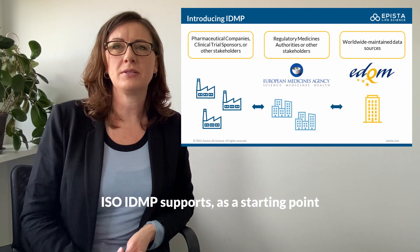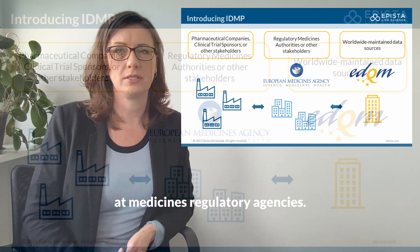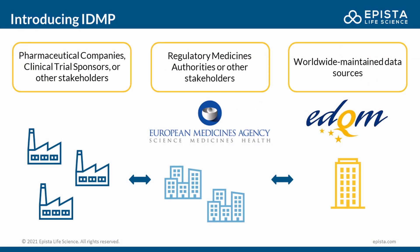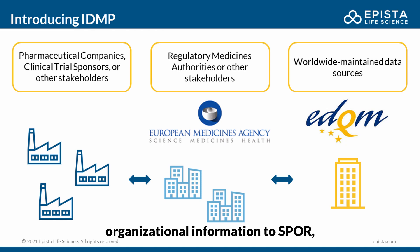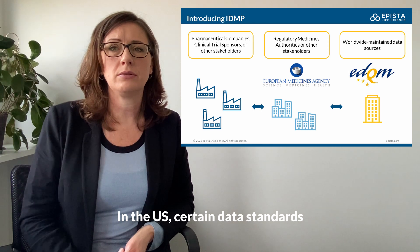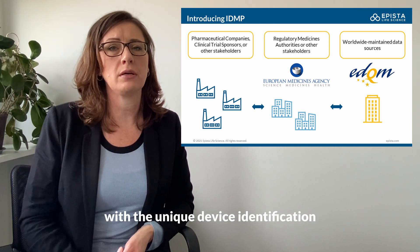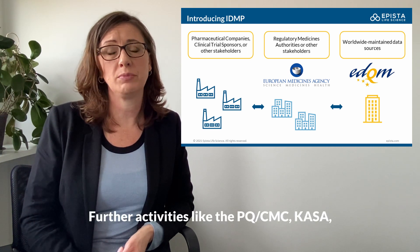ISO IDMP supports, as a starting point, the activities of data standardization at medicines regulatory agencies. Data exchange happens continuously between the pharmaceutical industry and medicines agencies. Examples include submitting product data for authorized products using XEVMPD, delivering organizational information to SPOR, or providing information on the assigned QPPV for pharmacovigilance, all for the European Medicines Agency. In the US, certain data standards are in place and used, for instance with the unique device identification and structured product labeling.